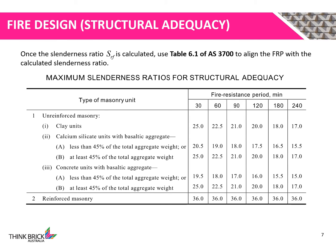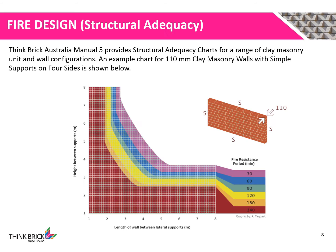Once we've determined our slenderness ratio from the formulas provided, we can use Table 6.1 of AS 3700 to align the fire resistance period with the calculated slenderness ratio. Think Brick Australia Manual 5 provides structural adequacy design charts for a range of clay masonry unit and wall configurations. You may use these to empirically determine the fire resistance period for structural adequacy in lieu of the mechanistic process shown beforehand.